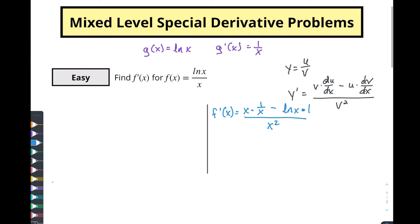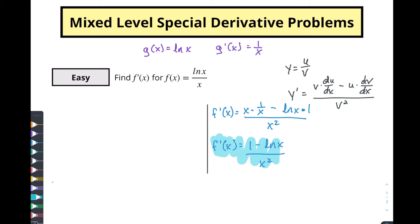Simplifying: f′(x) equals x times (1/x) — that's x/x which is 1 — minus ln(x) times 1, which is just ln(x), all over x squared. And there we go — that is our answer: (1 − ln(x)) / x².